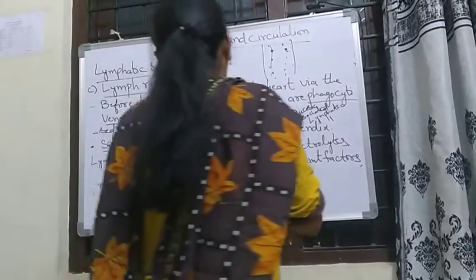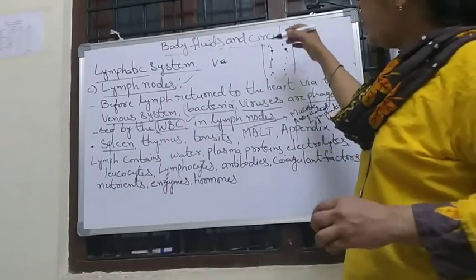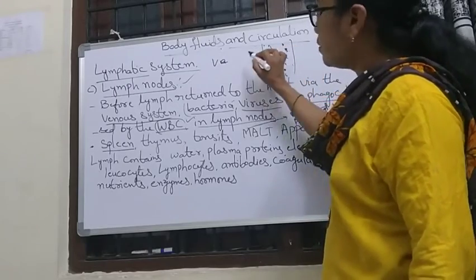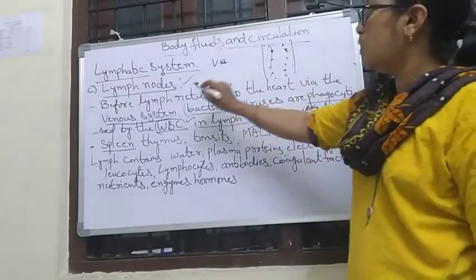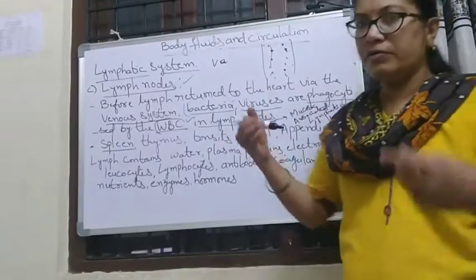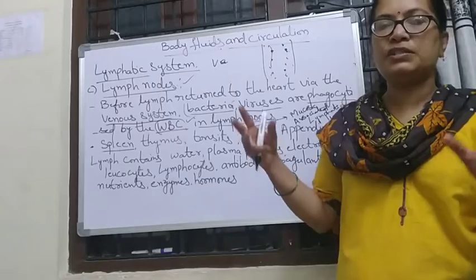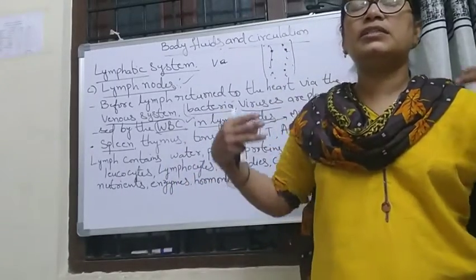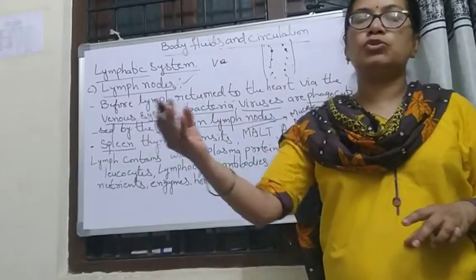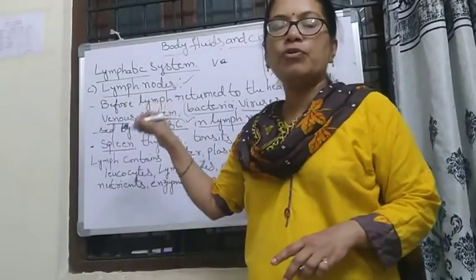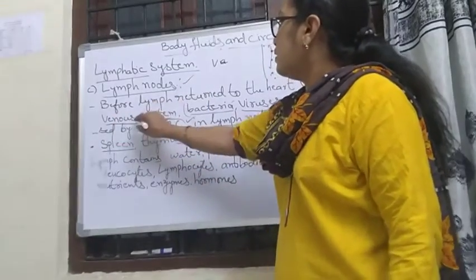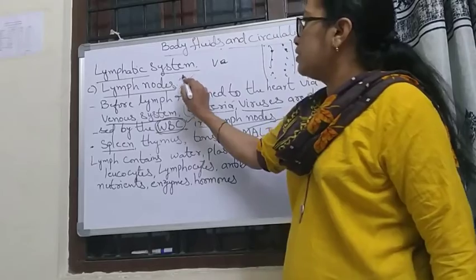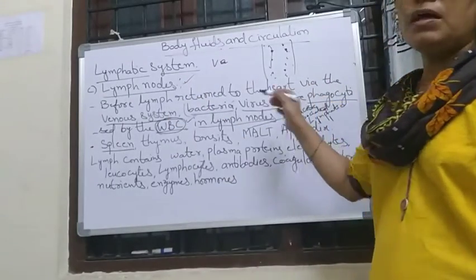Now we have the lymph nodes. These lymph nodes are present throughout our body from the neck down to the end. They are formed as nodes, and the lymphatic capillaries, nodes, and ducts are all arranged together. Before lymph returns to the heart — before entering into the venous system — the lymph may contain bacteria and viruses. Lymph nodes contain WBC, and those WBC engulf the bacteria and viruses, clearing the lymph before it goes to the heart.